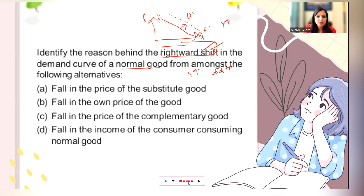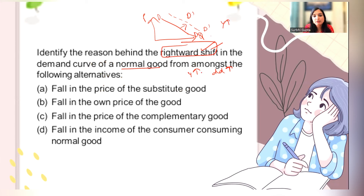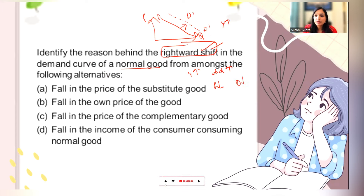One option is a fall in the price of a substitute good. If the price of a substitute good falls, then that substitute good will be consumed more rather than your good. So your good's demand will decrease. This is not the reason for a rightward shift.